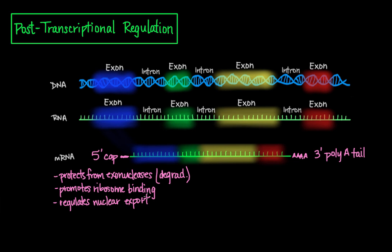And so the purpose of the poly-A tail is really very similar to the 5' cap, which is basically to protect from degradation, help with promoting translation, and regulating nuclear export. The poly-A tail also does one more thing, and it kind of just helps with transcription termination for the RNA polymerase that's transcribing the messenger RNA.